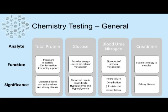General tests run on many panels include total proteins, which are used as transport materials, function in clot formation, and provide immunity support; abnormal levels can indicate liver or kidney disease. Glucose provides energy for cellular metabolism, and abnormal results can indicate hypoglycemia for low glucose levels or hyperglycemia for high glucose levels. Blood urea nitrogen is a byproduct of protein metabolism, and abnormal results can indicate heart failure, dehydration, increased protein diet, or kidney failure.